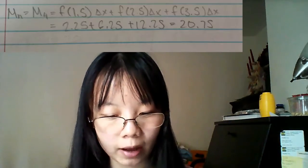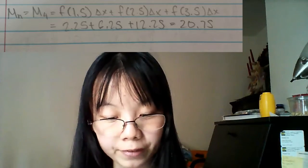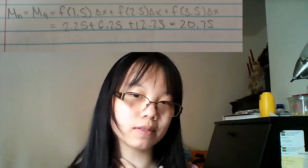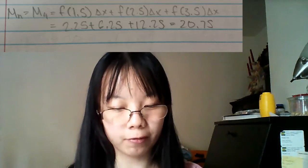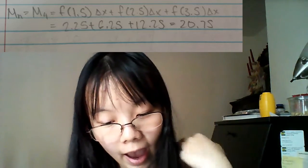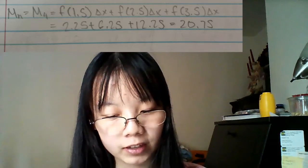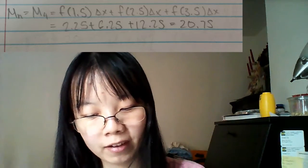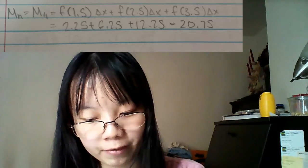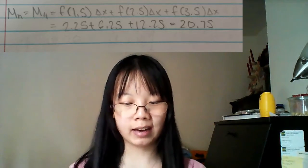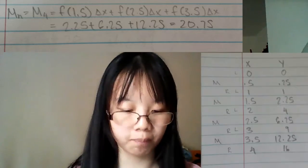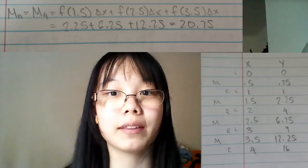And now, we'll head towards the middle bound. And you can pause it here, or continue on. Okay, now, let's go to the middle bound. MN equals M4 equals f parenthesis 1.5 times delta x plus f parenthesis 2.5 times delta x plus f parenthesis 3.5 times delta x. And now, let's go back to the table and see where the M's are. Oh, it seems like I made a mistake.